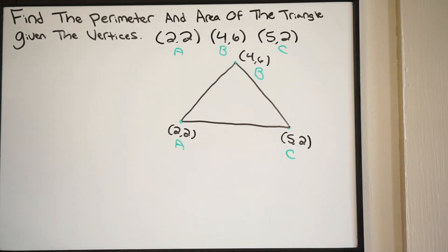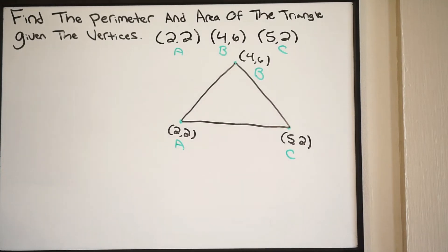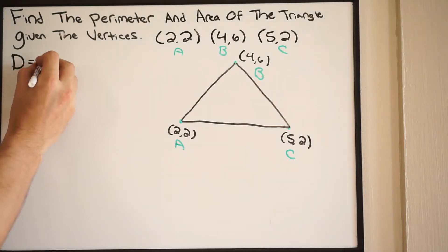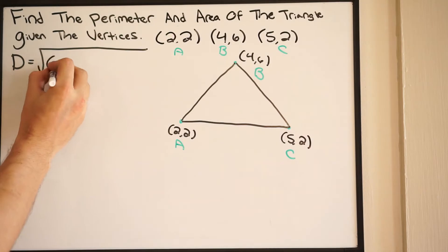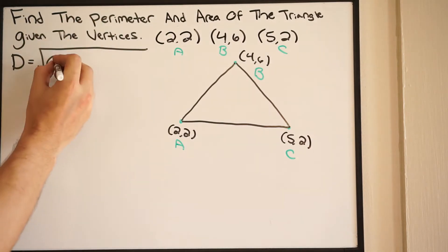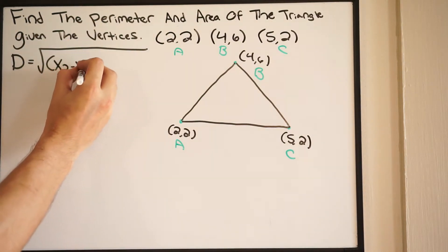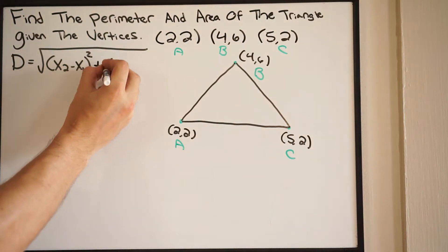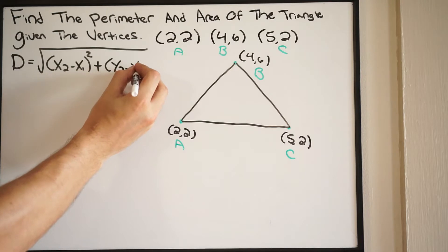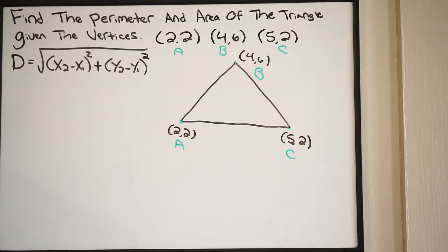They want us to find the perimeter and the area. Our first step is to find the perimeter. In order to do that we have to know the side lengths of our triangle, and we don't have those — we're only provided the coordinates of the vertices. So we're going to use the distance formula. The distance formula equals the square root of (x₂ − x₁)² + (y₂ − y₁)². That's the distance formula.